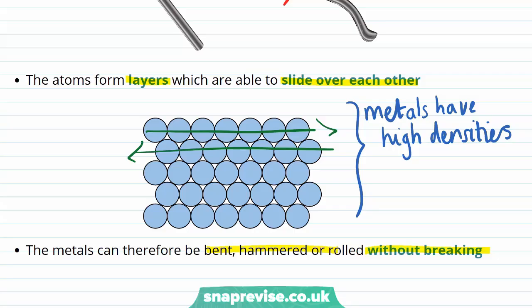We can therefore say that metals are generally malleable, shiny solids, which have high melting points, high densities and good conductivity of both heat and electricity.